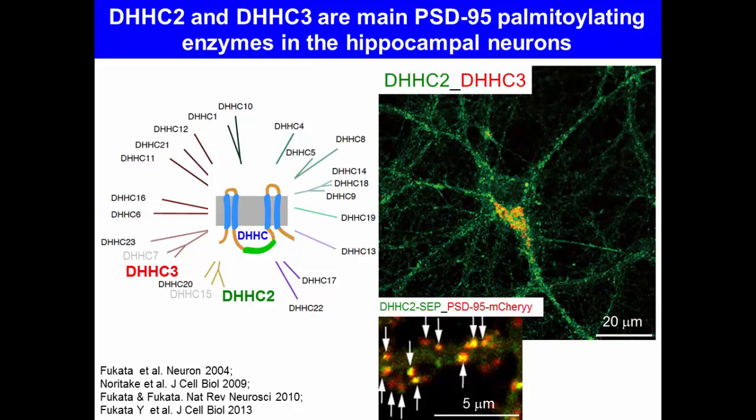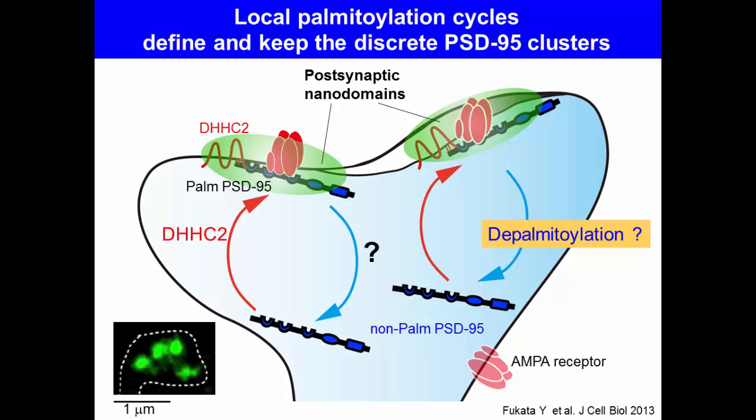Importantly, a pool of DHHC2 is inserted into the spine membrane, and the localization of DHHC2 is altered by neural activity.